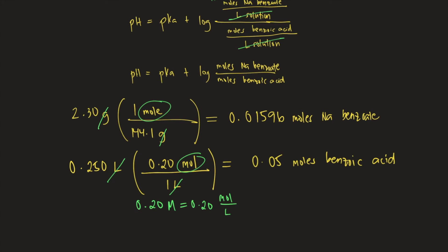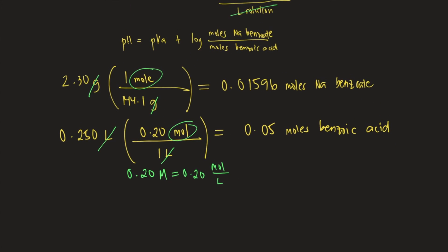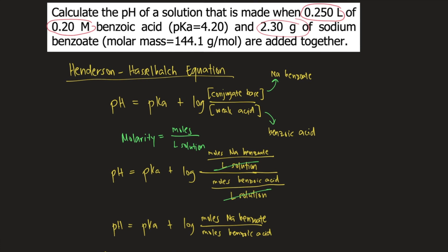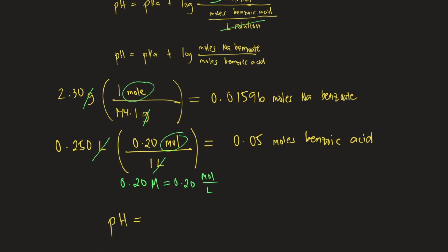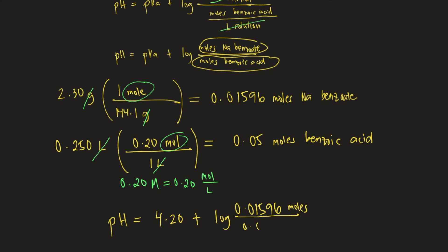Now that we have moles of conjugate base and weak acid, we can plug the numbers into the Henderson-Hasselbalch equation. pH equals pKa, which is 4.20, plus log of moles of sodium benzoate (0.01596) divided by moles of benzoic acid (0.05). Solving this gives a pH of 3.70. So the pH of the buffer solution is 3.70.